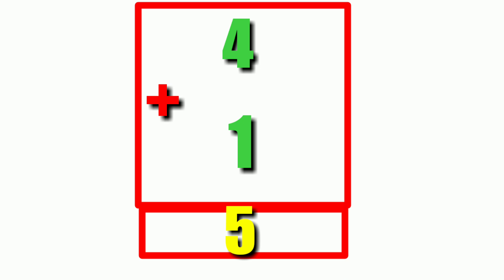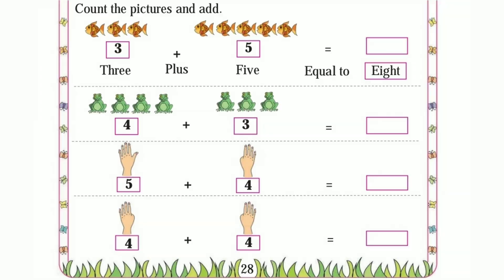Four plus one is equal to five. Count the pictures and add. Three plus five is equal to eight. Four plus three is equal to seven. Five plus four is equal to nine. Four plus four is equal to eight.